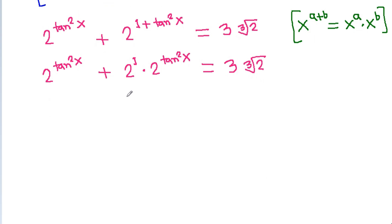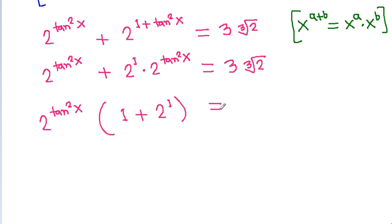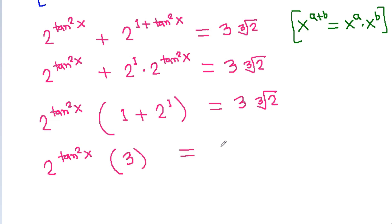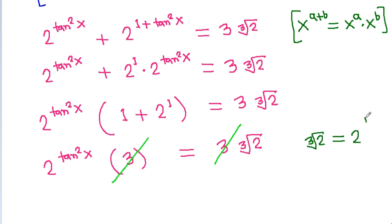Now we take 2 power tan squared x as a common factor, giving 2 power tan squared x times (1 plus 2 power 1) equal to 3 times cube root of 2. Since 1 plus 2 is 3, the 3 cancels on both sides, and cube root of 2 equals 2 power 1 by 3.